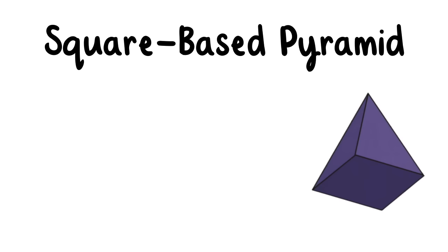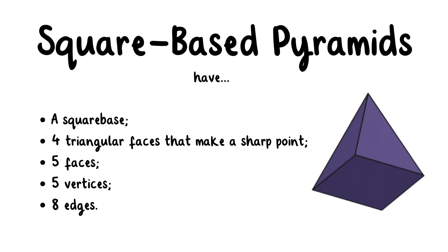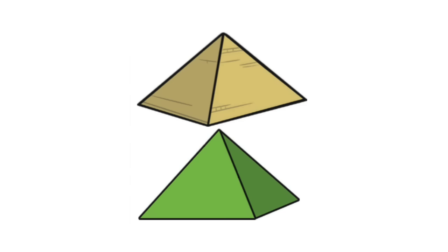This is a square-based pyramid. Square-based pyramids have a square base, four triangular faces that make a sharp point, five faces, five vertices, and eight edges. Here's a real-life example.